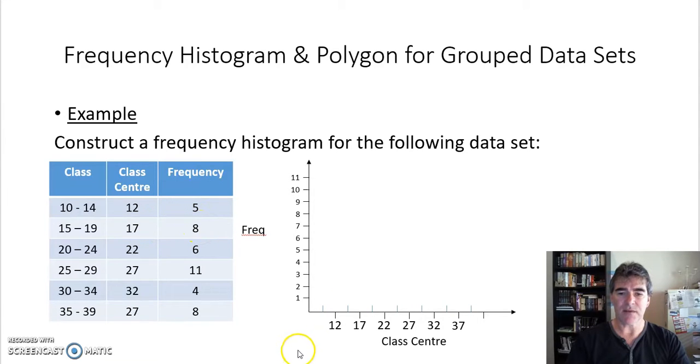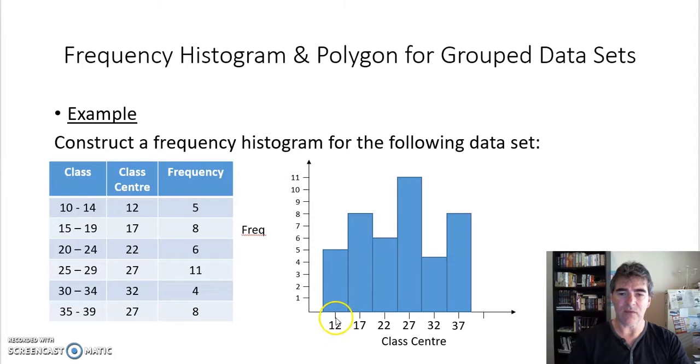17 has a frequency of 8, and we continue that, and we end up with our columns. Remember they're centered over the top, and we've got this extra one here which is going to help us with our polygon later, and also we've got this half column width gap here. So just remember all of that from what we did last time.